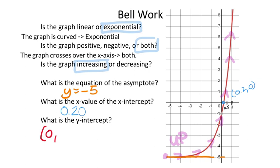I can see it goes through this point at (0, negative 1). So I've got the ordered pair (0, negative 1)—that's my y-intercept. And that answers all these questions.